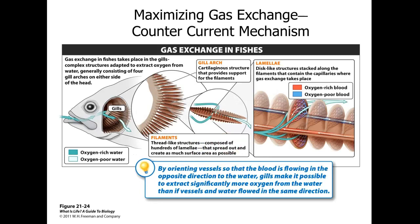Fish use a counter-current method for maximized gas exchange. Their gill structure — typically four gill arches on either side of the head — supports filaments composed of hundreds of lamellae that spread out to maximize surface area. The lamellae are disc-like structures stacked along the filaments, containing capillaries where gas exchange takes place, extracting the most oxygen in and expelling the most carbon dioxide.